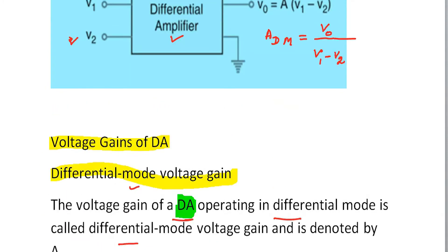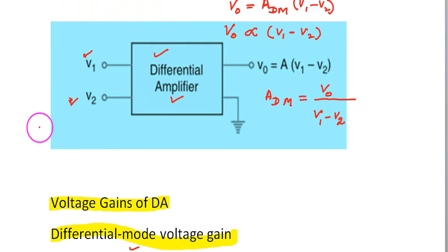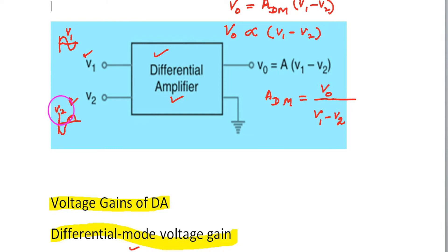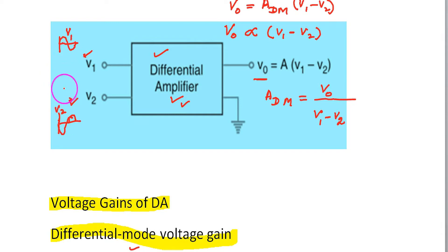Now, if we have two signals — like one signal is like this and the second signal is like this, opposite in phase — these are called Differential Signals. A differential amplifier gives maximum output voltage for this type of differential signal, where V1 and V2 are opposite in phase.